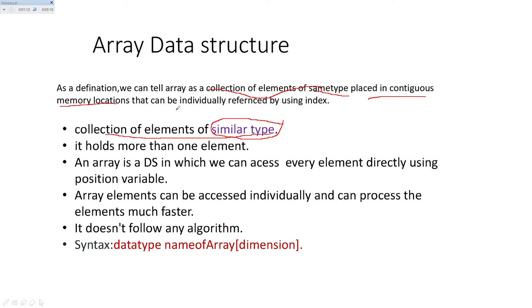Arrays are placed in contiguous memory locations, meaning with some fixed difference — 1 byte, 2 bytes, 3 bytes, or 4 bytes difference. It is nothing but contiguous memory location with some difference based on the data type. For example, integer data uses 4 bytes.